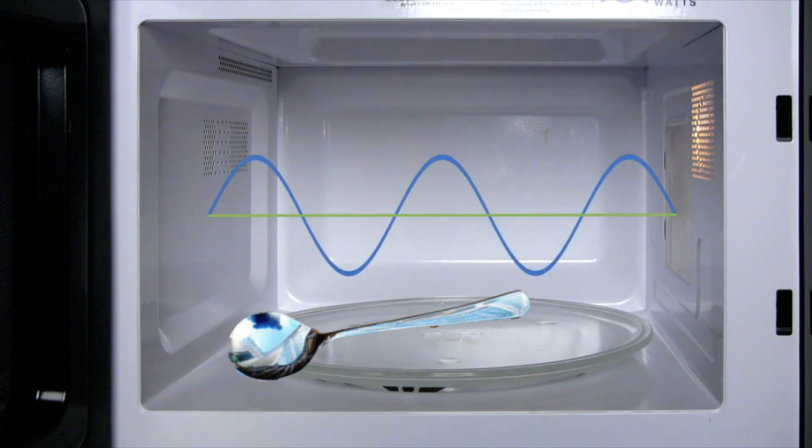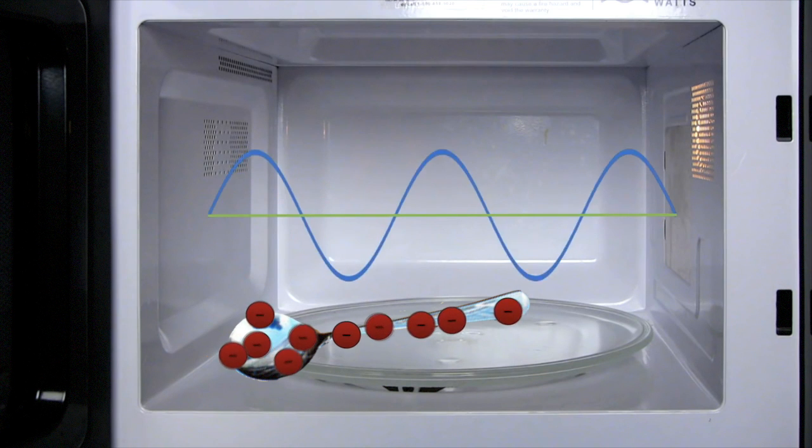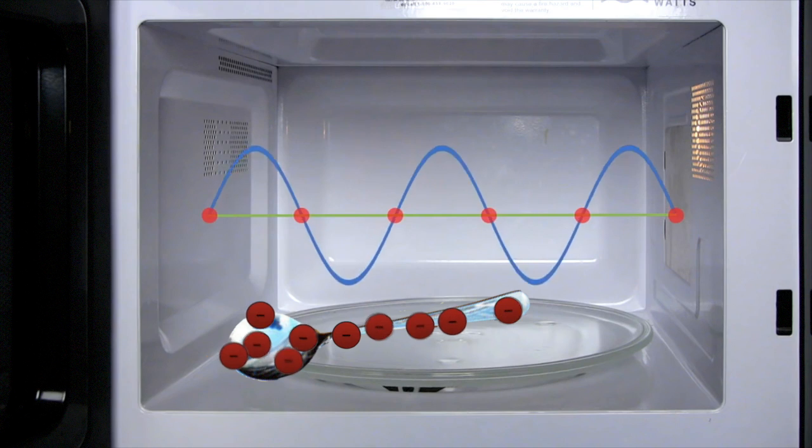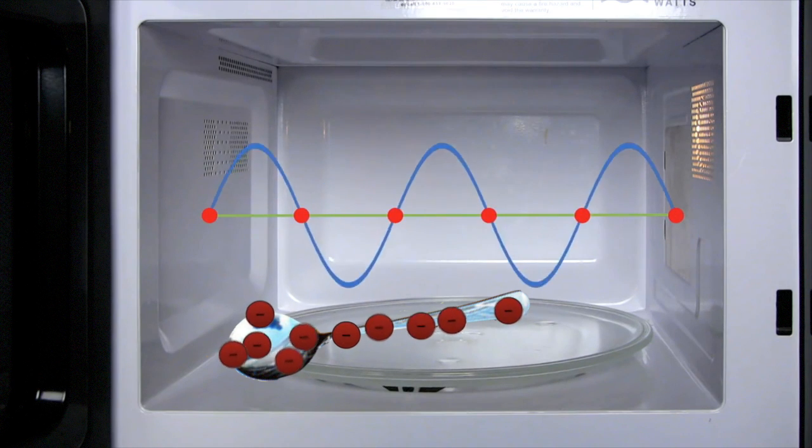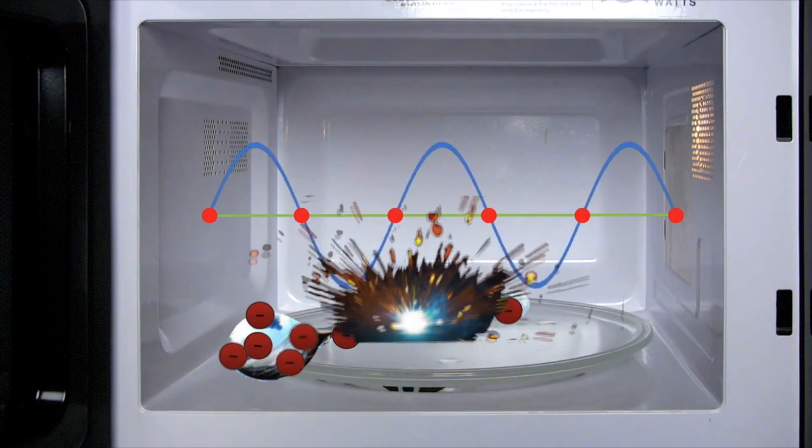You see, when microwaves hit metals, electrons on the metallic surface end up moving side to side rapidly. The electrons are moving so fast it creates a lot of heat, which creates sparks when interacting with metal.